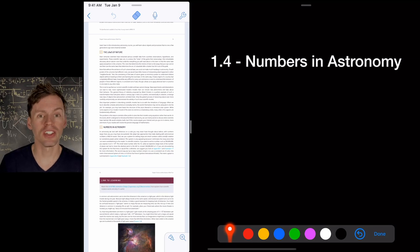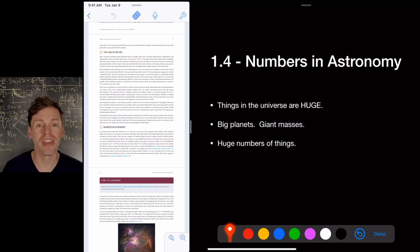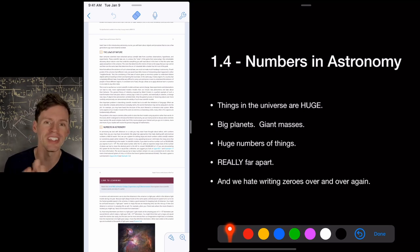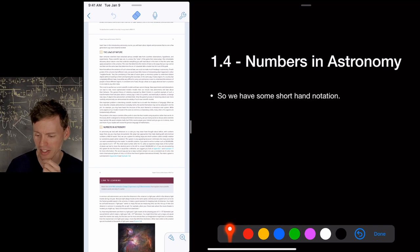So numbers in astronomy, things in the universe are huge. Planets are huge. You have giant masses. There's a huge number of things out there, right? And they're really far apart. So we need a new set of numbers and units to deal with this because we hate writing zeros over and over and over again, unless it's in your bank account. When it's not so bad, you don't mind writing a lot of zeros, but you don't know what that's like. Probably, I don't know what that's like. I assume it's wonderful. Okay. So we have some shorthand notation.